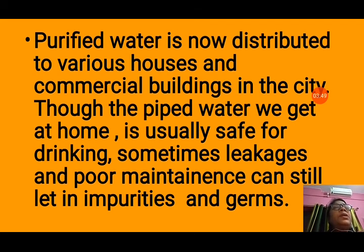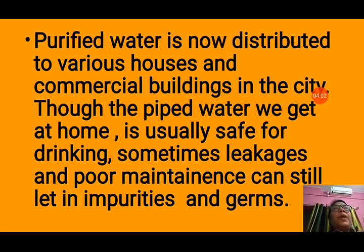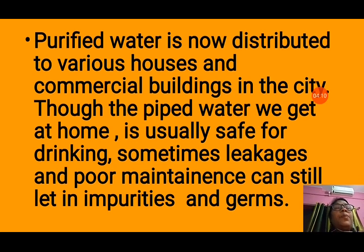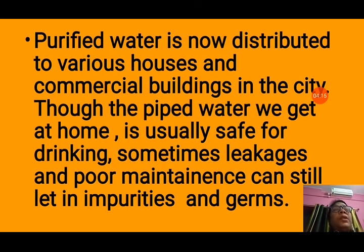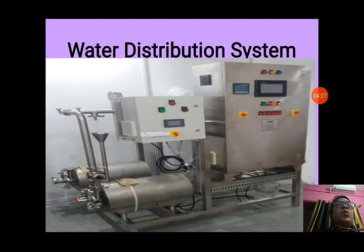Though the piped water we get at home is usually safe for drinking, sometimes leakages and poor maintenance can still let in impurities and germs. Since water pipes are underground, any leakage or damage may cause drinking water to mix with drainage pipes, making the water impure and unsafe for drinking.